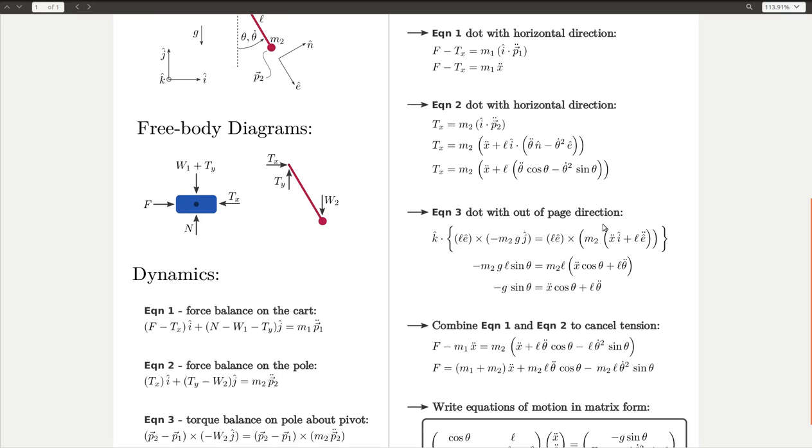We have to do the same substitution for p2 double dot, which is a little bit complicated, but it's the same sort of thing. We can do a few more cross products, and it simplifies out to this expression here, and then we can divide through by ml to get this final equation here.